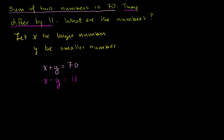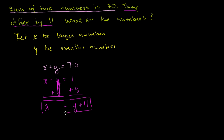Let's solve for x in the second equation. If you add y to both sides, the y terms on the left cancel and you get x is equal to 11 plus y. Then we can substitute that into the top equation. Instead of x plus y equals 70, we substitute x with (y + 11), giving us: y plus 11 plus y is equal to 70.